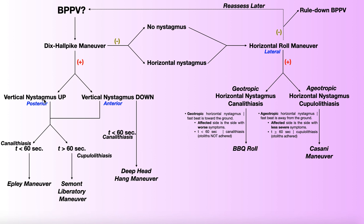What happens if you perform the Dix-Hallpike maneuver and you don't get vertical nystagmus? Then it is a negative test. A negative Dix-Hallpike maneuver is normally associated with one of two results: either the reproduction of horizontal nystagmus or no nystagmus at all. Horizontal nystagmus is much less common, and could theoretically indicate an issue with the horizontal canal, but more often than not it actually indicates a central issue like multiple sclerosis.